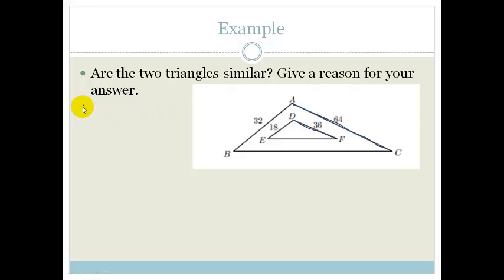Let's do a ratio. So we're going to go DF over AC, which would be 36 over 64. And if we divide both at the top and the bottom by 2, I get 18 over 32.